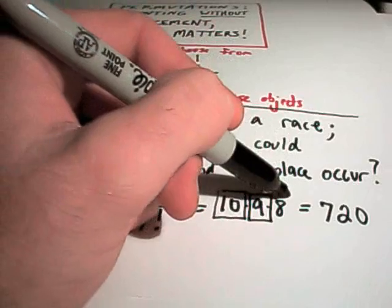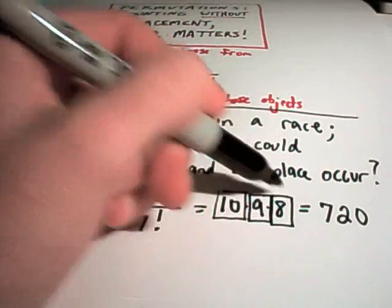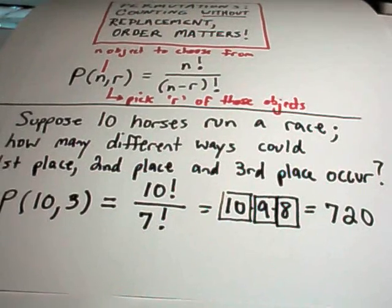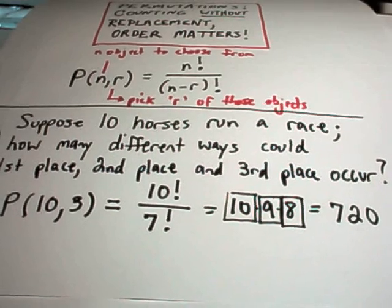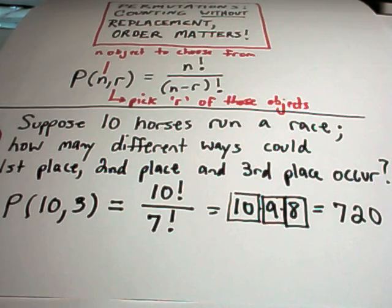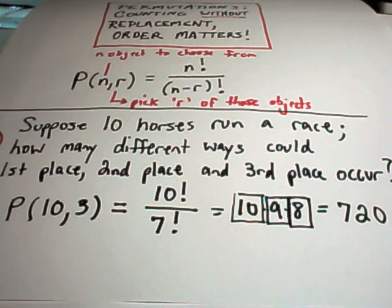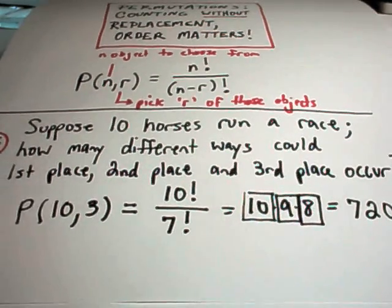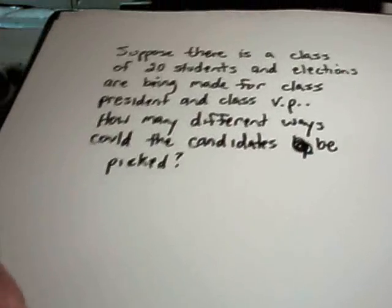And then for third place, there's only eight horses left, which would leave you with eight choices. So permutations are really just kind of a simplified way. It's basically you're just using the multiplication principle, that's all it is. It's nothing really that new if you've been using the multiplication principle.